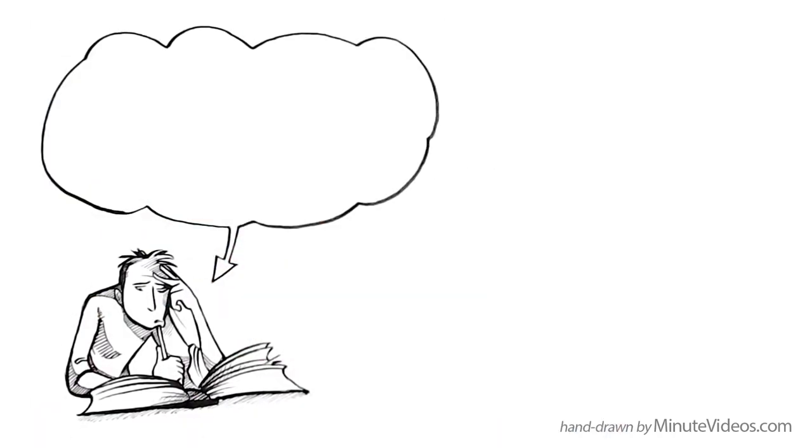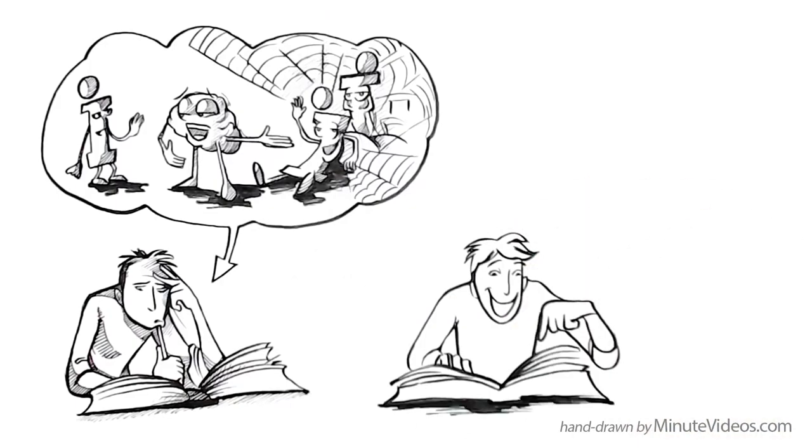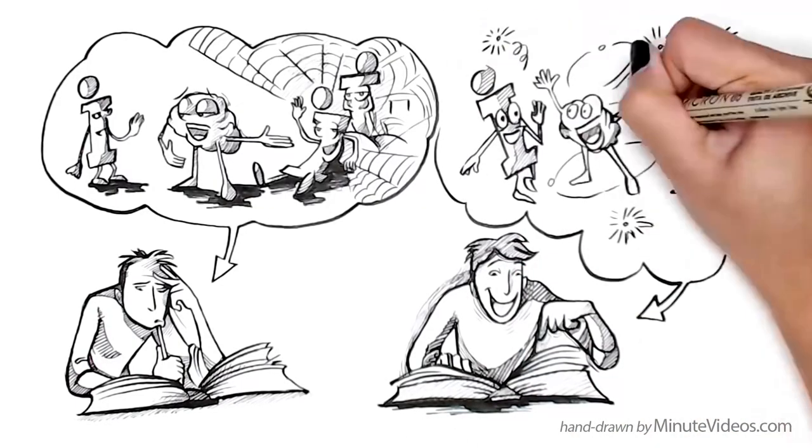Learning happens inside our brain when new information connects with existing memory. When we are excited or enthusiastic, our brain happens to do that much better.